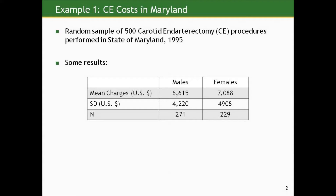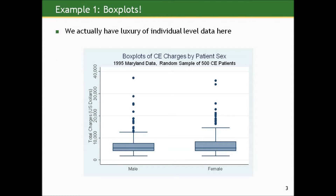We only have sample data, and we want to take what we have and extrapolate to the population of all males and females who had the procedure performed in 1995. We actually have the luxury of individual-level data here. In the other two examples, I was pulling summary data from published articles. I have the data, and if you want to play with it, it's posted on the lecture site. We can actually look at visual evidence before we even get into the inferential world.